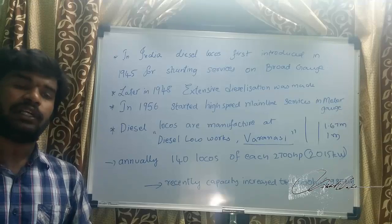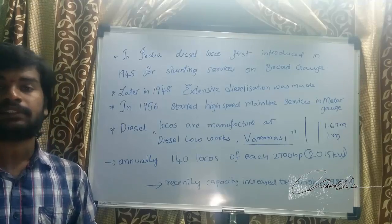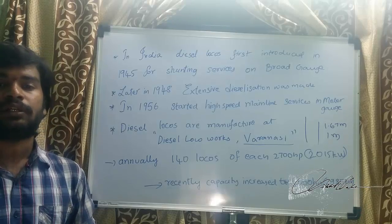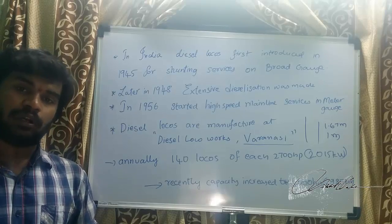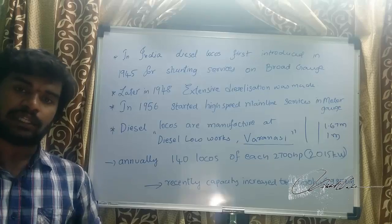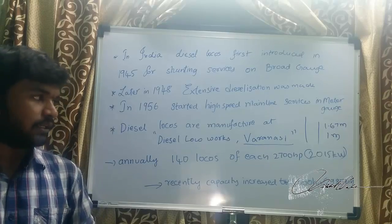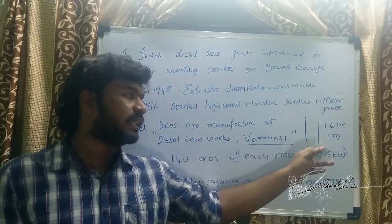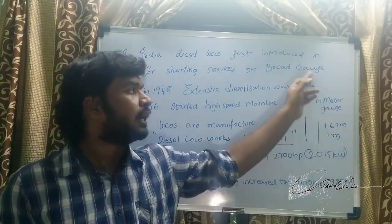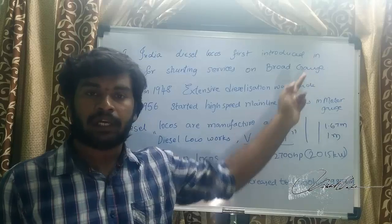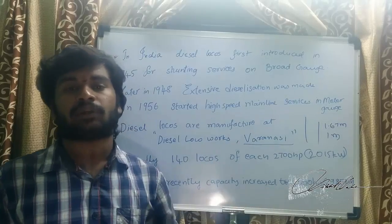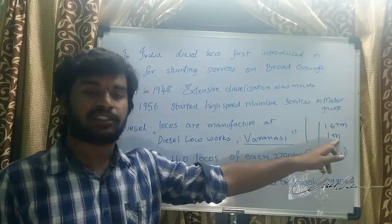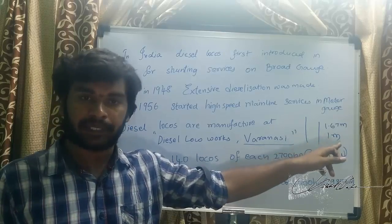In 1956, diesel drives were started for high-speed mainline services in meter gauge. Trains run on two parallel tracks. The distance between two tracks is 1.67 meters — this is called broad gauge. Broad gauge is used for goods or shunting services.